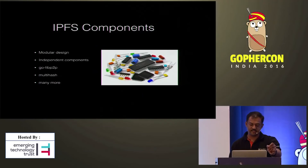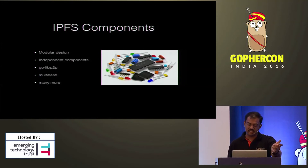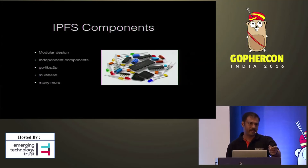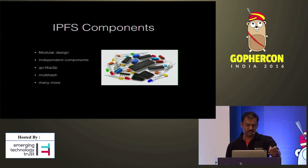We can use components of IPFS independently. We have already seen how the P2P communication portion of IPFS can be used in our own application. The hash encoding called multi-hash — an algorithm-independent hash encoding — is also available as a separate Go package. If you want to store some hash in an algorithm-independent way, you could use this package. There are many such components available in IPFS that we can use in our own applications.